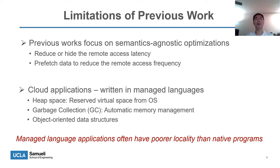The GC has two major phases: tracing and reclamation. Tracing is a reachability analysis used to find alive data. Reclamation is used to compact the alive data together. Besides, unlike native applications that usually operate on primitive data structures, managed language applications operate on object-oriented data structures. All these characteristics make managed language applications have poorer data locality than native applications.